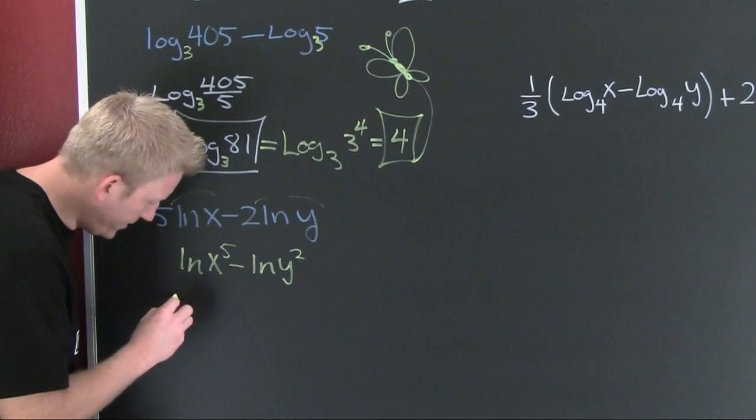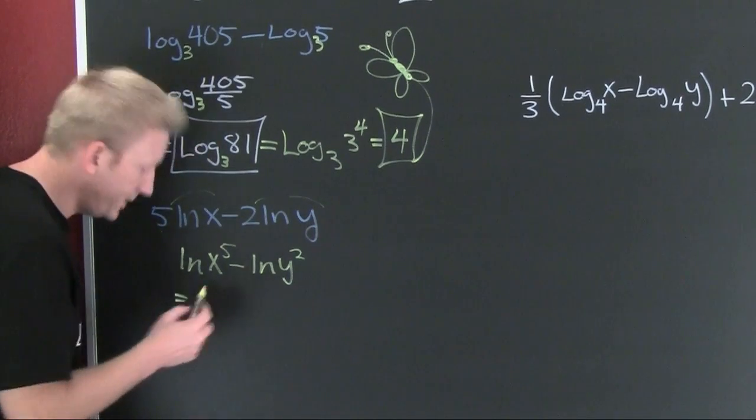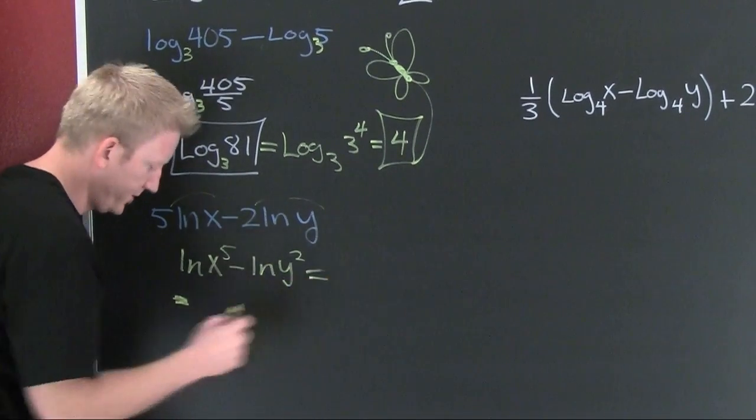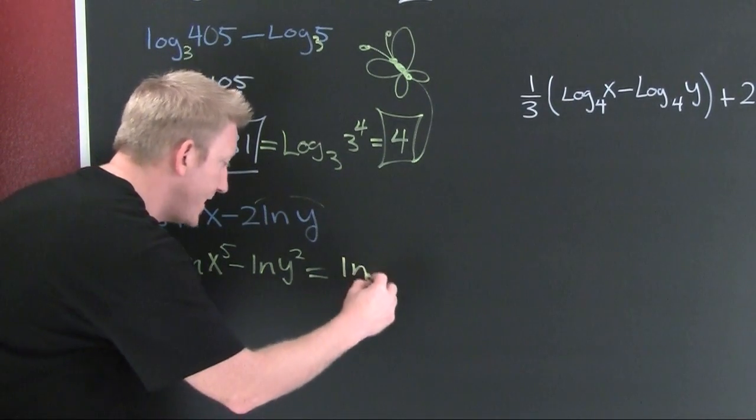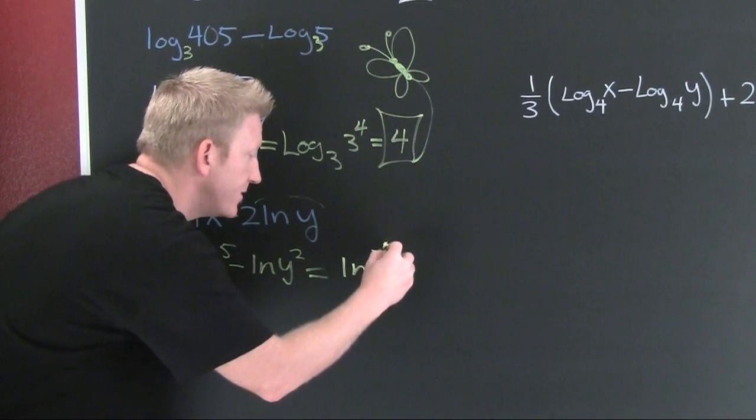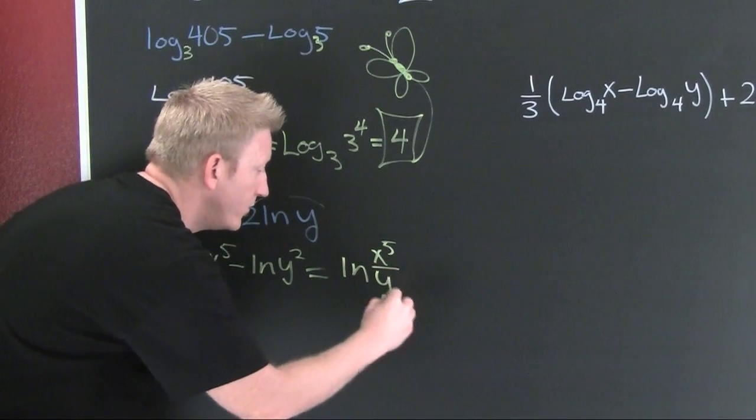And another video. You know what? I'll put that right here. Now I have the difference of logs. That's the log of the quotient. That's the natural log of x to the fifth over y squared.